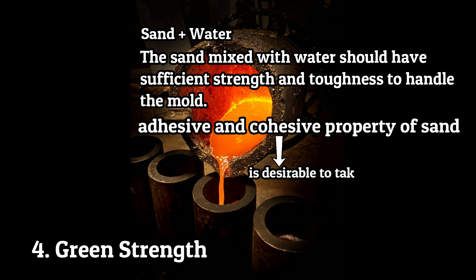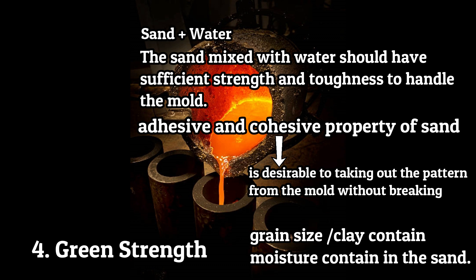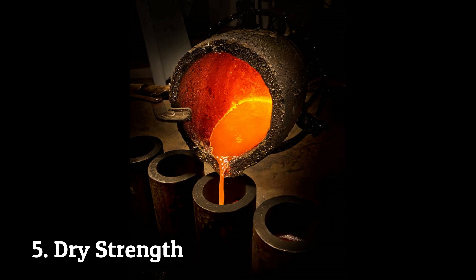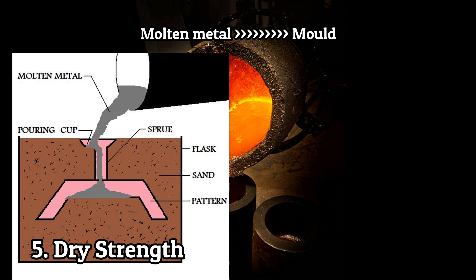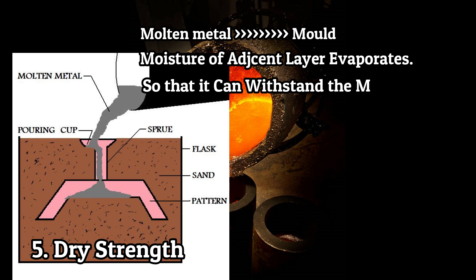The cohesiveness of particles is desirable for taking out the pattern from the mold without breaking it. Green strength depends on grain size, clay content, and moisture content in the sand. When the molten metal comes in contact with the mold, the moisture of the adjacent layer evaporates, making it dry. So the dry strength of sand should be sufficient enough to withstand the molten metal.